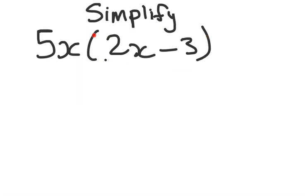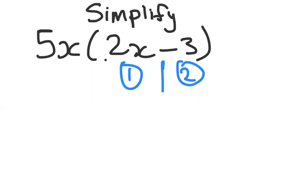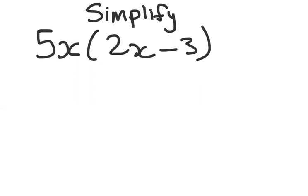In this case there are two terms: 2x and minus 3. The way we distinguish between terms is we look at the signs — the minus tells us this is term one and that is term two. We're going to multiply whatever is outside the bracket by each term inside the bracket, so 5x multiplied by 2x and by minus 3.